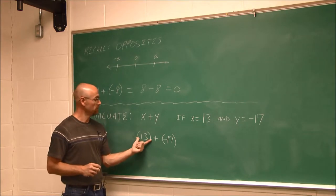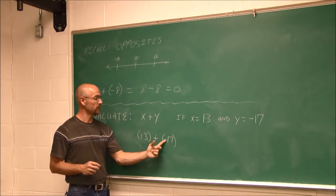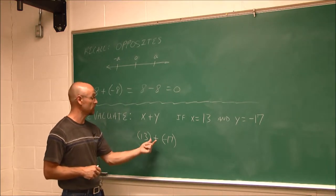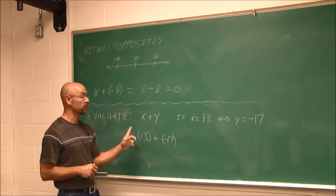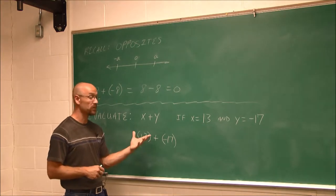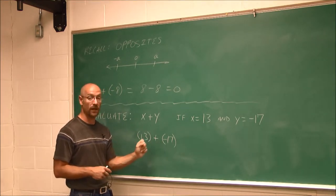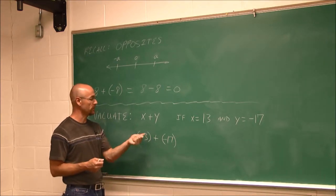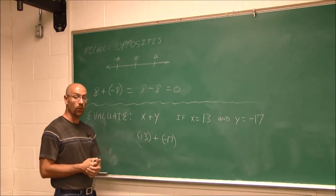So now we have a problem that is 13 plus negative 17. We can think of it two ways. I can say they have different signs, so when I combine them, I'm going to find their difference. Same sign combined, different signs find their difference. So I'm going to think, what's the difference between 17 and 13? Well, the difference is 4.